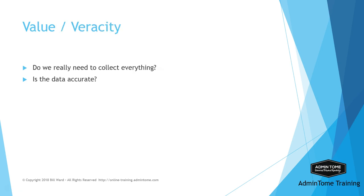The last V is value, or veracity. Collecting all data can be costly, so we want to make sure that the data we are getting has value to us — we don't want to collect data that is meaningless. We also want to make sure that the data we collect is accurate. For example, collecting data about the room temperature of our server room may not have much value for predicting customer behavior.